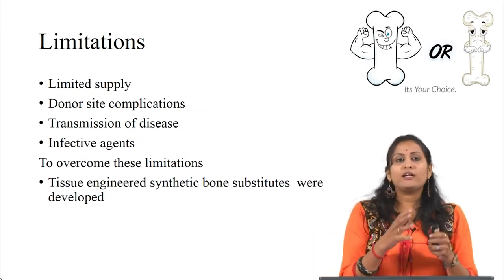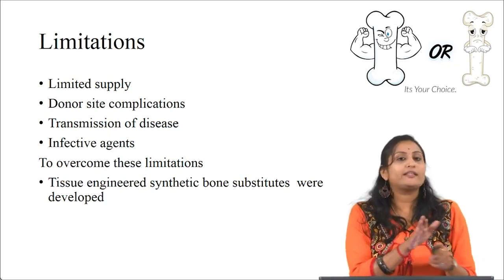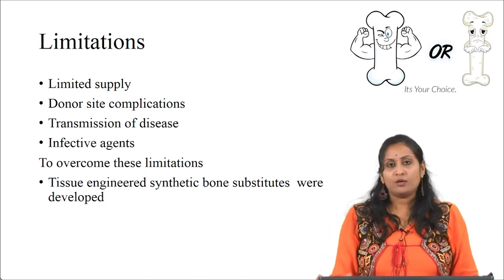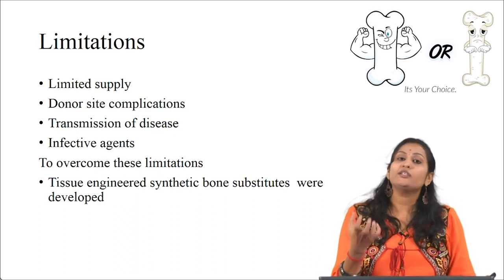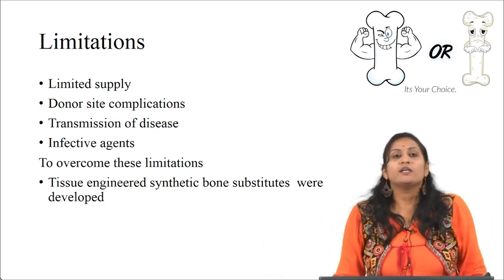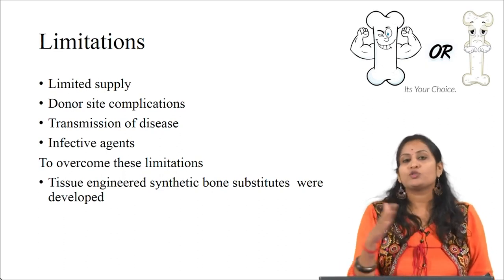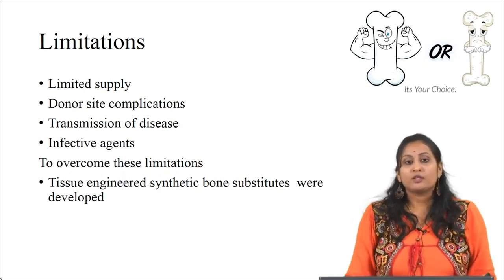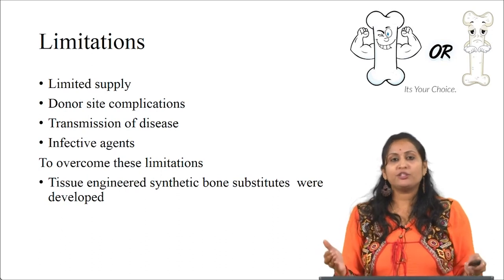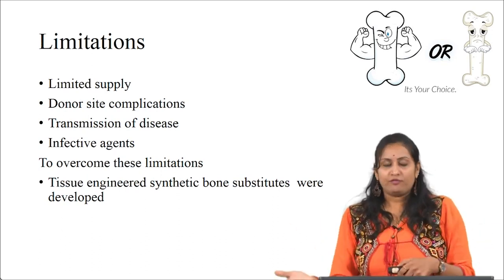Also, autografts lead to nerve injuries at multiple harvest sites due to surgeries. In cases where a large amount of tissue needs to be transplanted, autograft cannot be used because the availability of tissue is limited. Whereas in allografts, it is associated with pathogen transfer and also immune rejection. So we need a better treatment option to enhance bone regeneration or to repair bone defects.